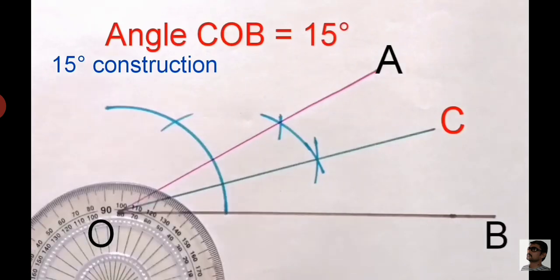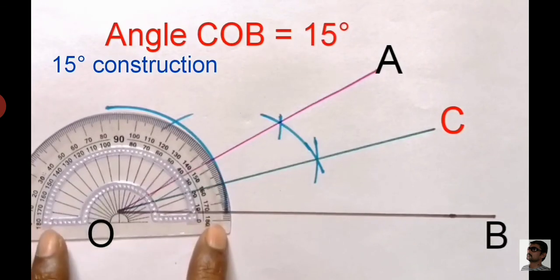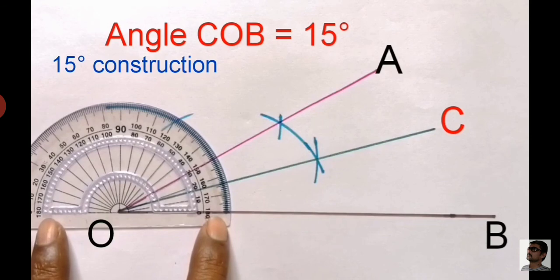We can check it again with the help of a protractor. Angle COB is 15 degrees.